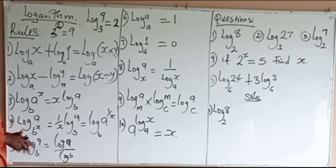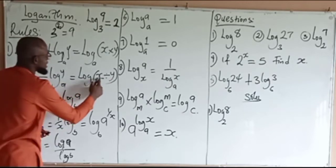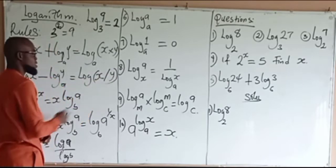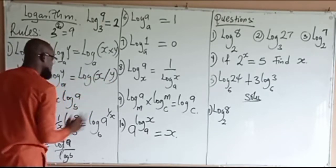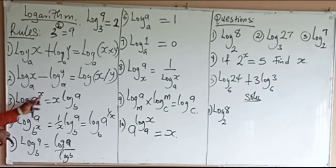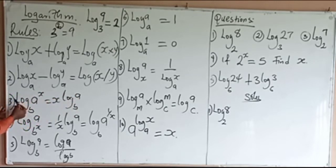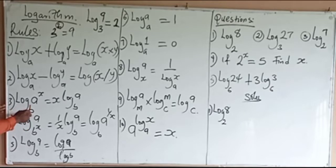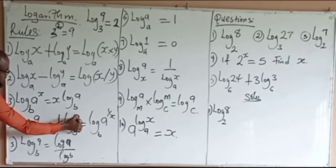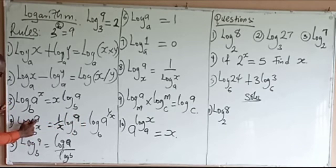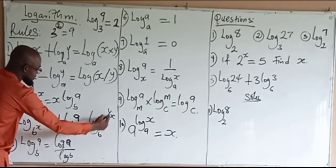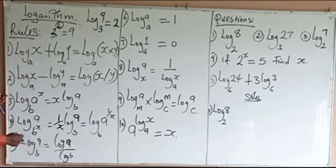The second rule: if you have log X minus log Y, you are going to have log of X divided by Y. Then the third rule: if you have log A to base B raised to the power X, you move the power to the front. So it becomes X times log A to base B. You can also take the inverse of that power, giving you 1 divided by X times log A to base B.